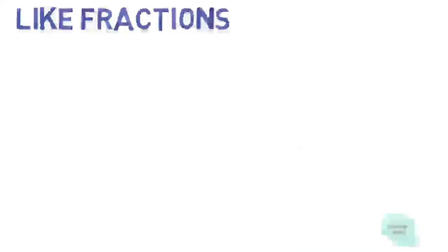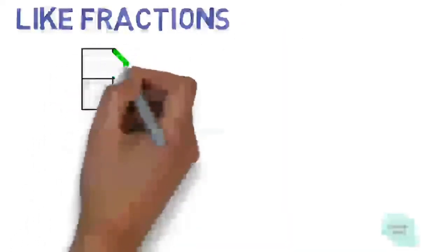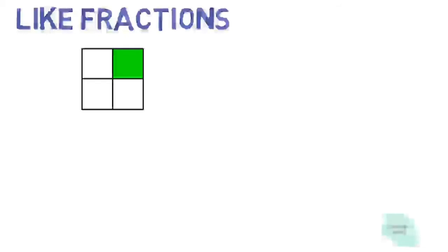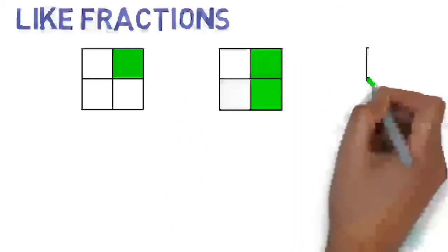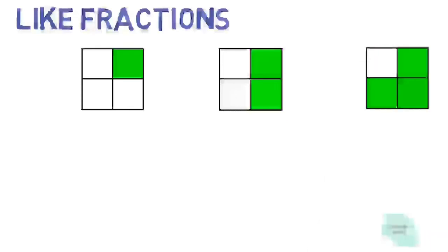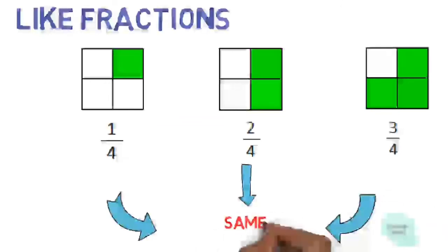The second type is like fractions. So I will explain it through one example. Here there are three squares divided by four equal parts, and the fractions of the shaded portions are one fourth, two fourths, and three fourths. Look at the fractions; they have a common denominator. When all fractions have the same denominator, we call that like fractions.